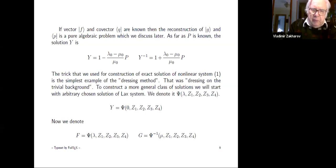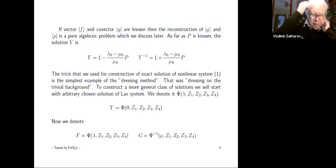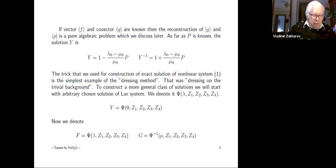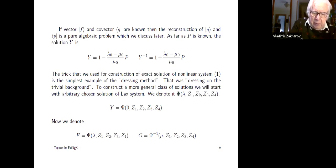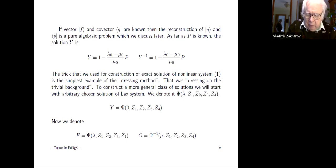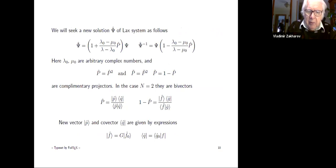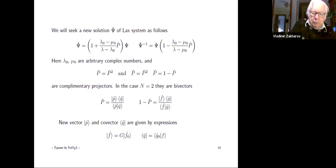In a general case, if we perform dressing from an arbitrary level, we have some solution of the Lax pair corresponding to some solution of the initial system. This system is called the generalized Manakov-Zakharov system, because the first example was studied in my work with Manakov in 1981. The dressing functions here involve lambda-naught and mu-naught. A new solution is again constructed by the same construction.